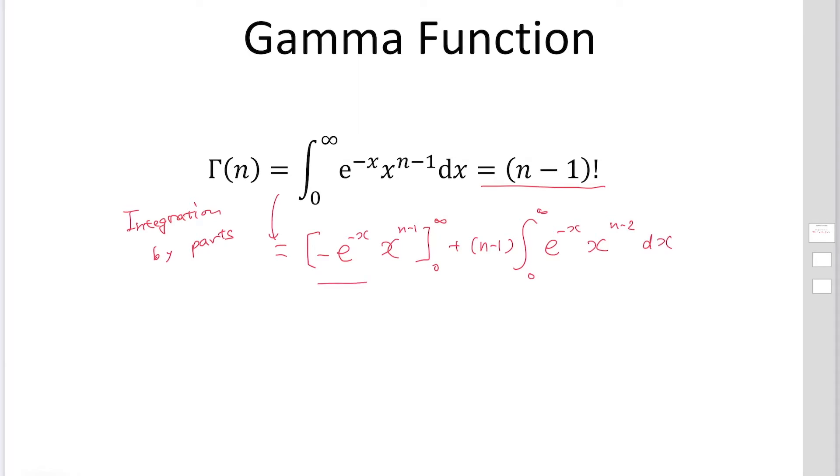So the first term, if you substitute x equals infinity, this term is going to be 0. And if you substitute x equals 0, x to the n-1 is going to be 0. So the first term is going to be 0.